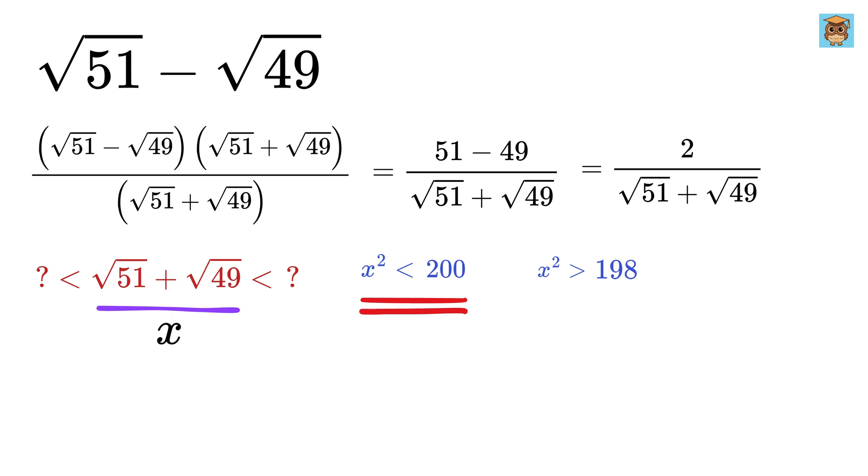Now if x square is less than 200, then it is also less than 225, which is 15 square. So this part gives x is less than 15.